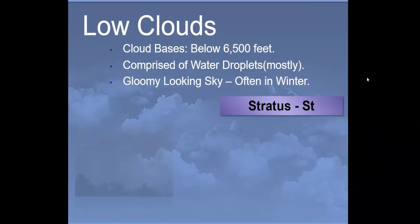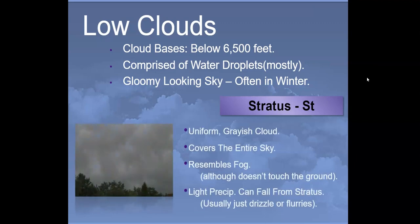The next low cloud type is a stratus cloud. Remember, stratus means layer. These are uniform gray clouds that cover the whole sky. They often resemble fog but don't reach the ground, so you can still see the tops of trees. Usually you'll find some light precipitation falling from them — drizzle or flurries.